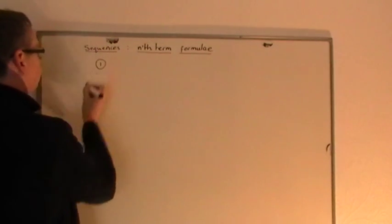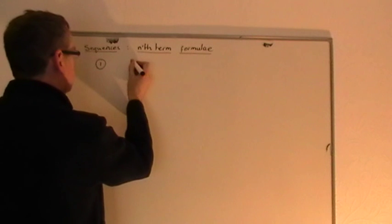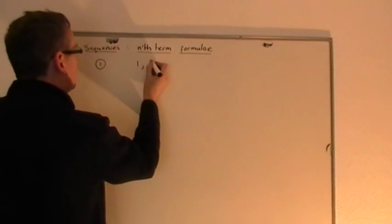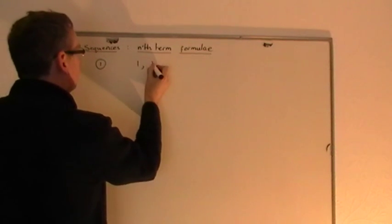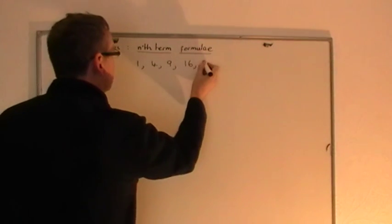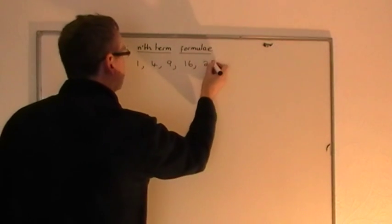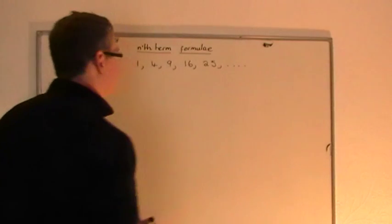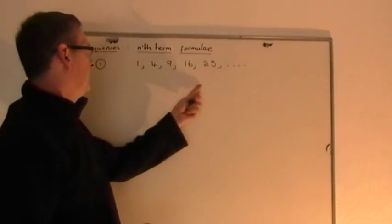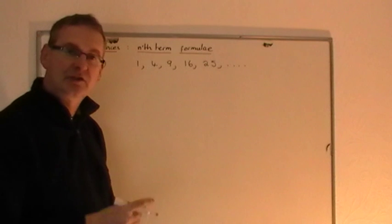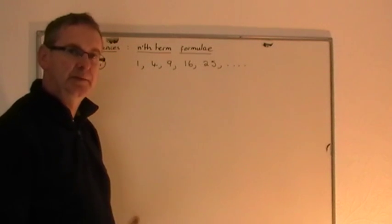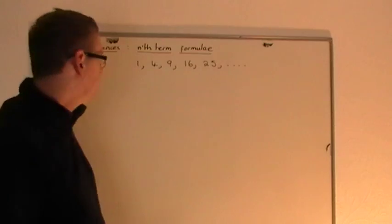If I have a look at number 1, let's say I give you a sequence which is 1, 4, 9, 16, 25, and so on. You can see that the numbers are rising. Now you're trying to find an nth term formula for this particular sequence of numbers.